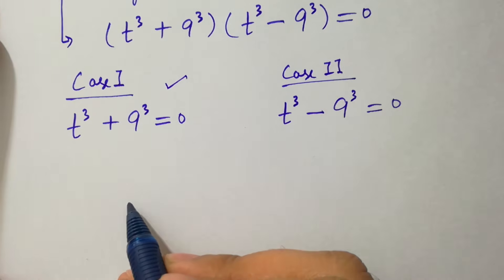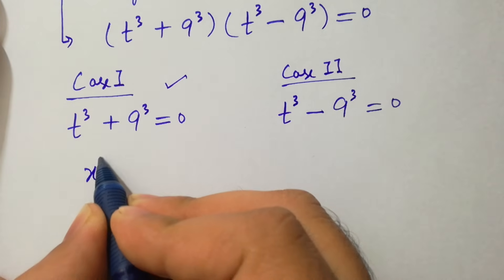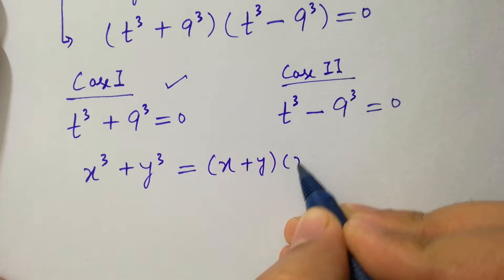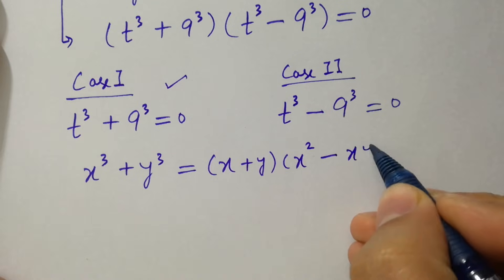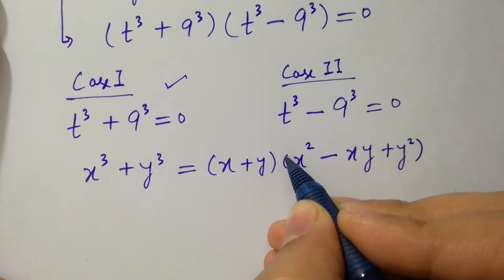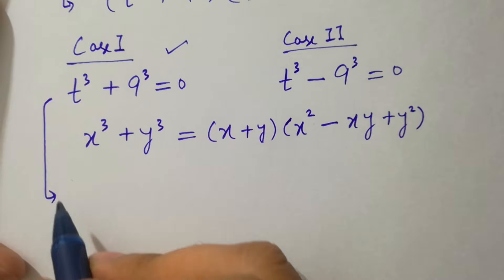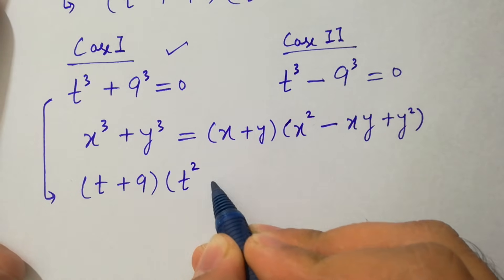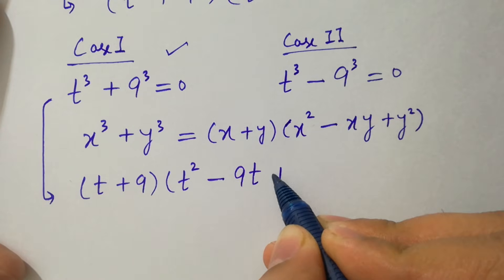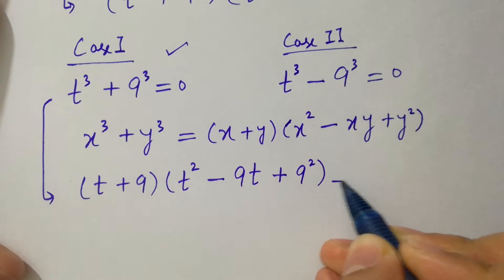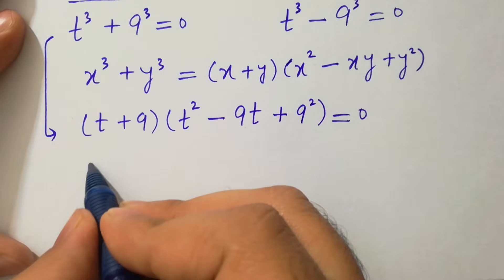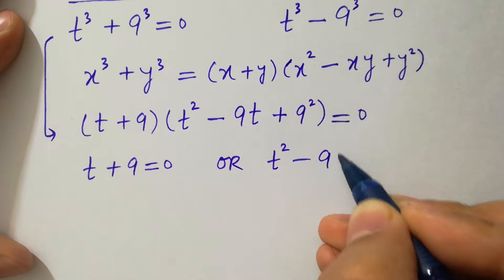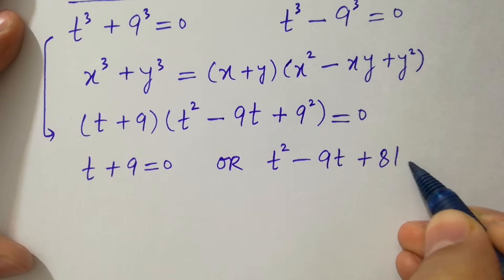First, solve Case 1. Using the sum of cubes formula x³ + y³ = (x + y)(x² − xy + y²), we get (t + 9)(t² − 9t + 81) = 0. Either t + 9 = 0, or t² − 9t + 81 = 0.